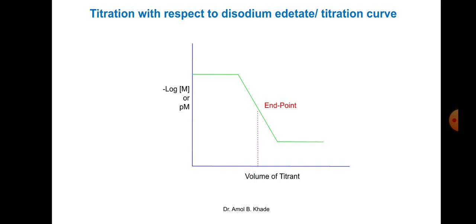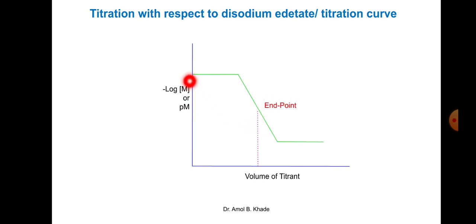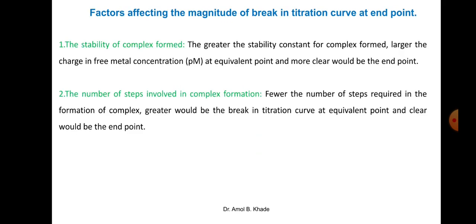On the X axis we take the volume of titrant, and on the Y axis we take PM (negative log of metal ion concentration). There is a drastic increase in PM — that rapid increase represents the endpoint of the complexometric titration.